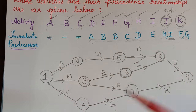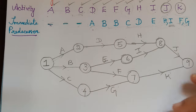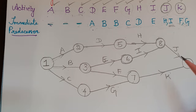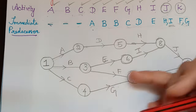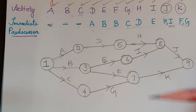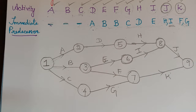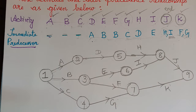Always draw a rough diagram first and then make it a fair diagram using scales and straight lines. The reason for drawing rough diagrams is that sometimes we may have dummy activities, and we may need to rearrange arrows so they do not intersect without a node. Hope you have understood how to draw the network diagram when activities are given as alphabets. We will see more problems on this in future videos. Thank you.